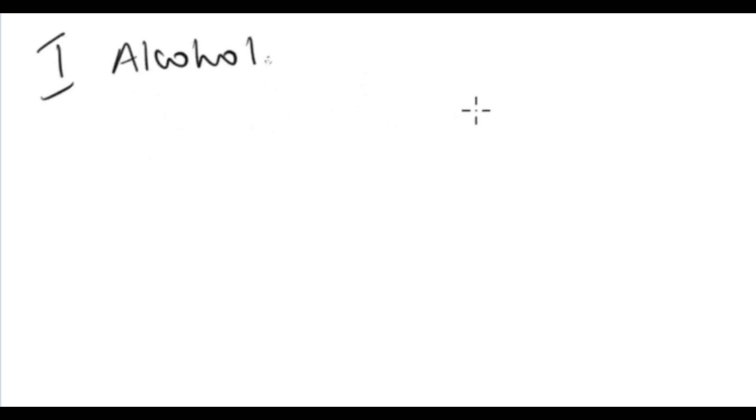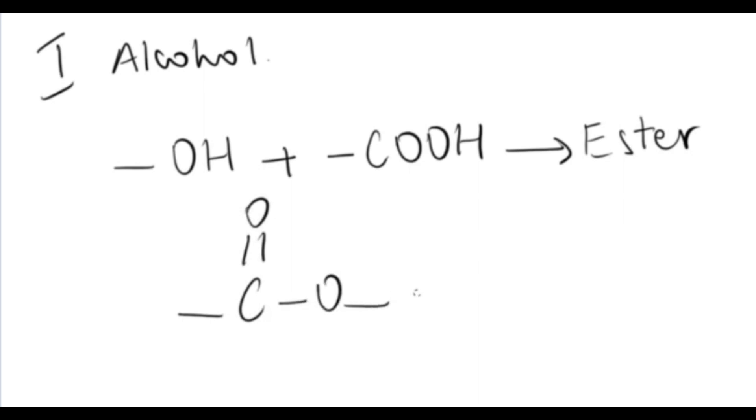So the first type is with alcohol. When you have hydroxyl group and you have carboxyl group, you will get ester. And if you remember from a previous video, I mentioned what an ester bond looks like. It looks like this: the carbonyl group attached with an O to the alcohol, and that is the ester bond.